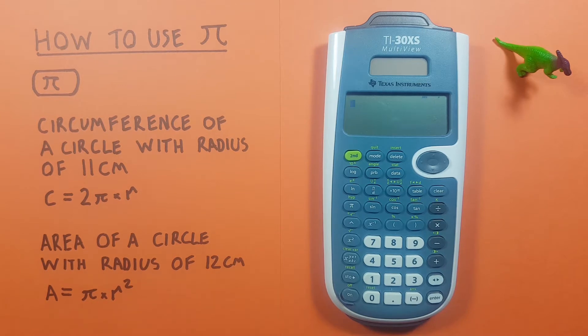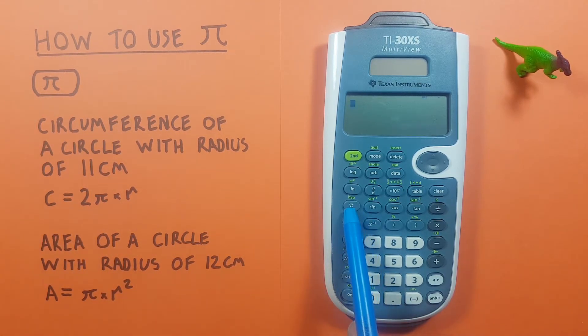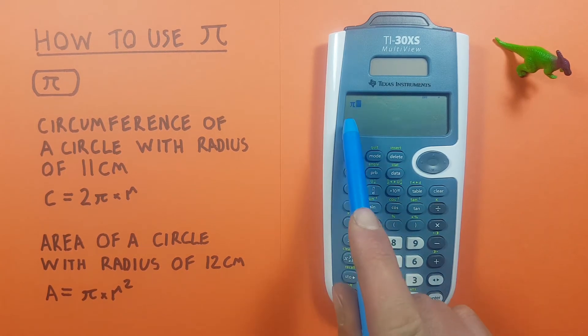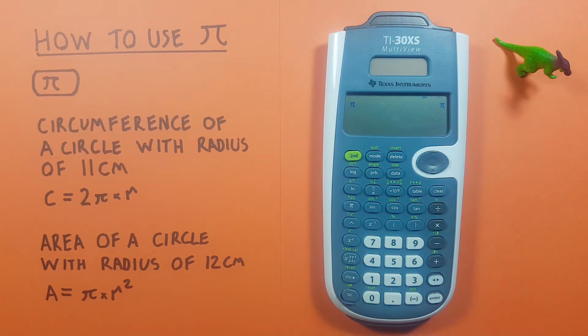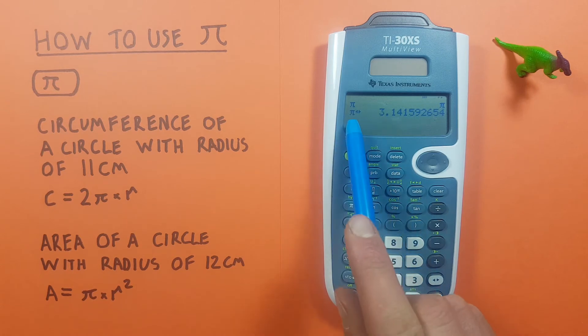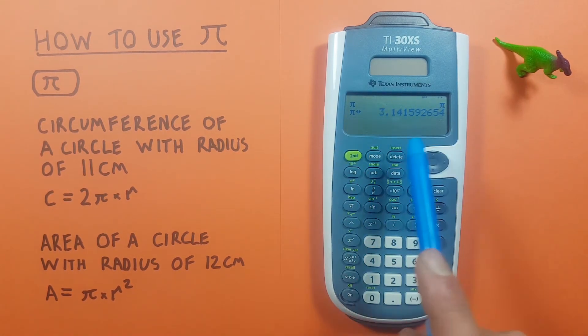To do this we'll be using the PI key that looks like this and is located here. If we press the PI key we see the PI symbol appear on our calculator, and if we use the conversion key that's this one here, we see that converts to 3.14159 etc., which is PI.